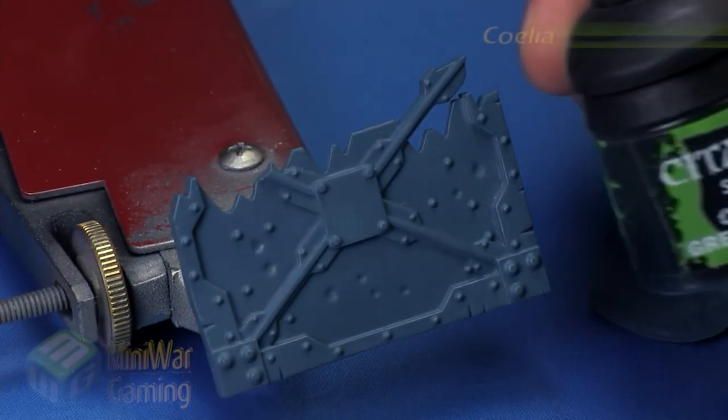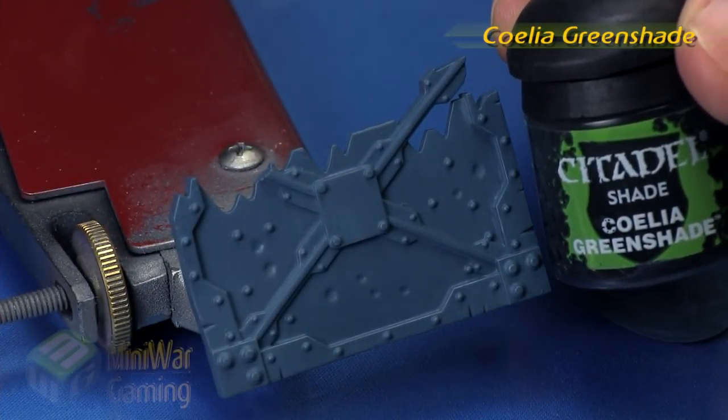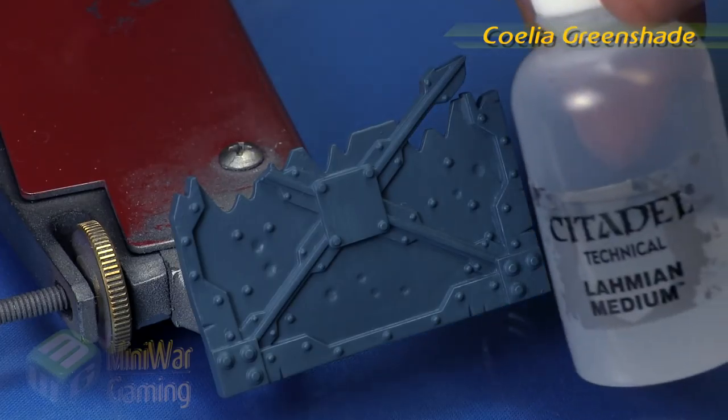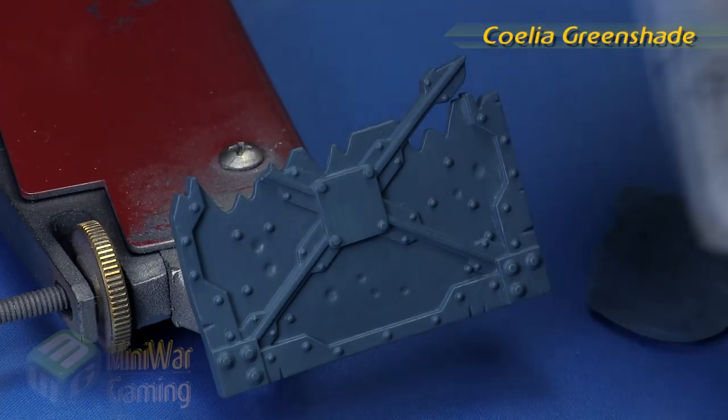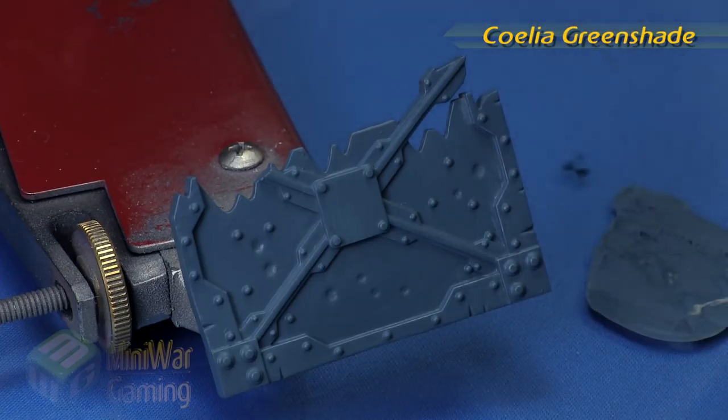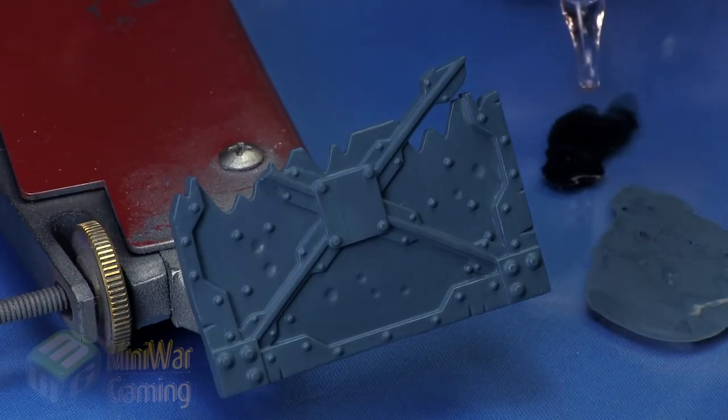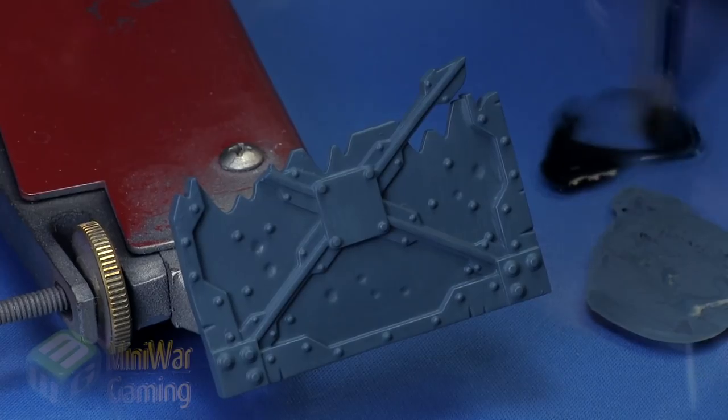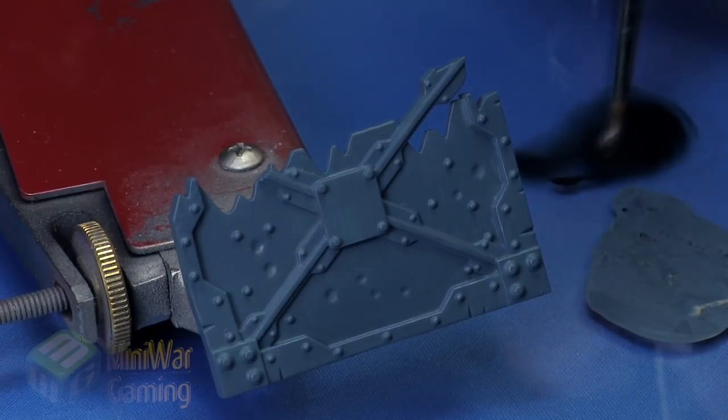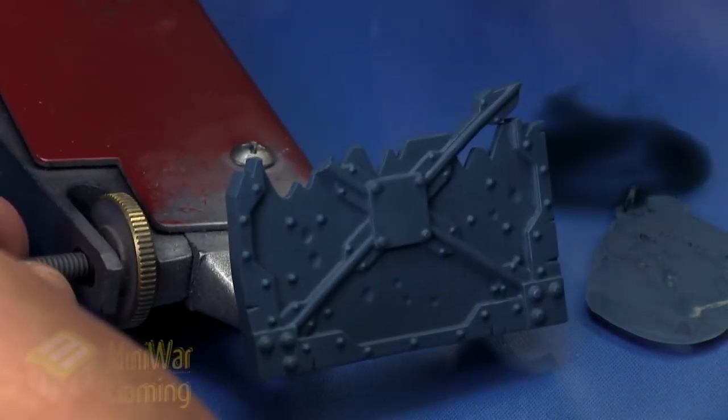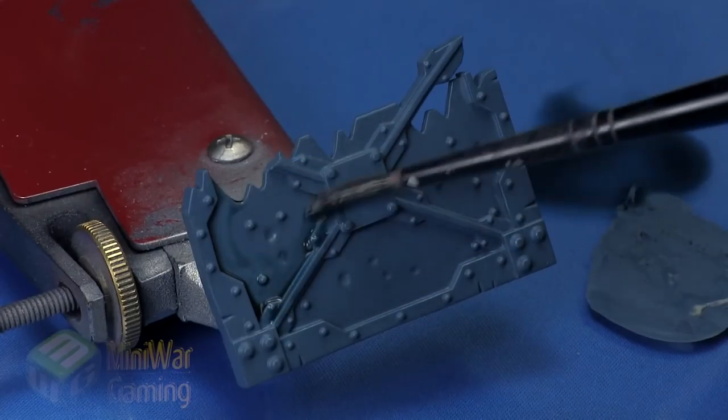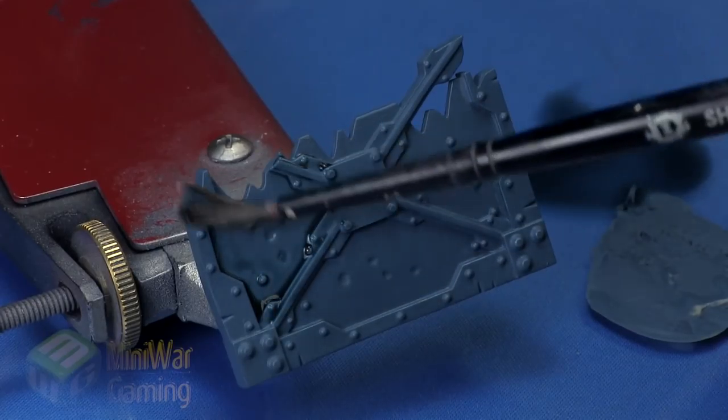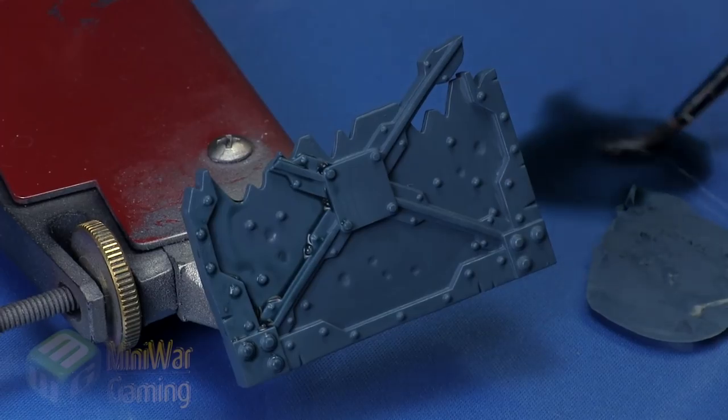Coelia green shade is next, with a heavy helping of Lahmian medium. We're going to use two drops of Liquitex fluid and we're basically thinning the color way out so it doesn't change the overall value too much of the areas of the model. We're going to allow this to reside within the recesses around the bolt heads and into little nooks and crannies.